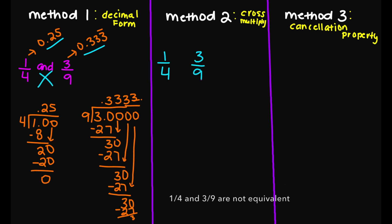Let's look at method number two. So we have 1 times 9 is going to equal 9. And then 4 times 3 — this is going to equal 12. So 12 and 9, these two do not equal. So again, we know using method number two that those two fractions are not equivalent.